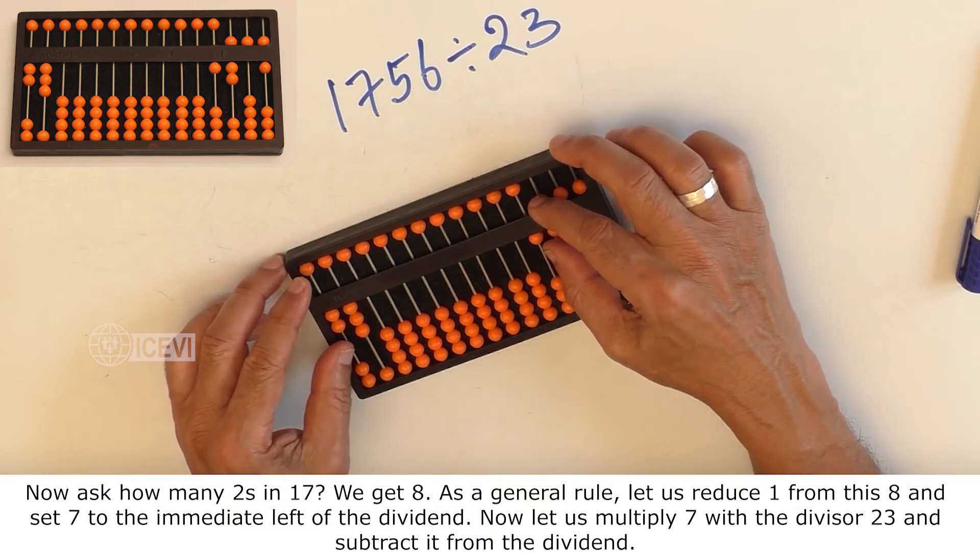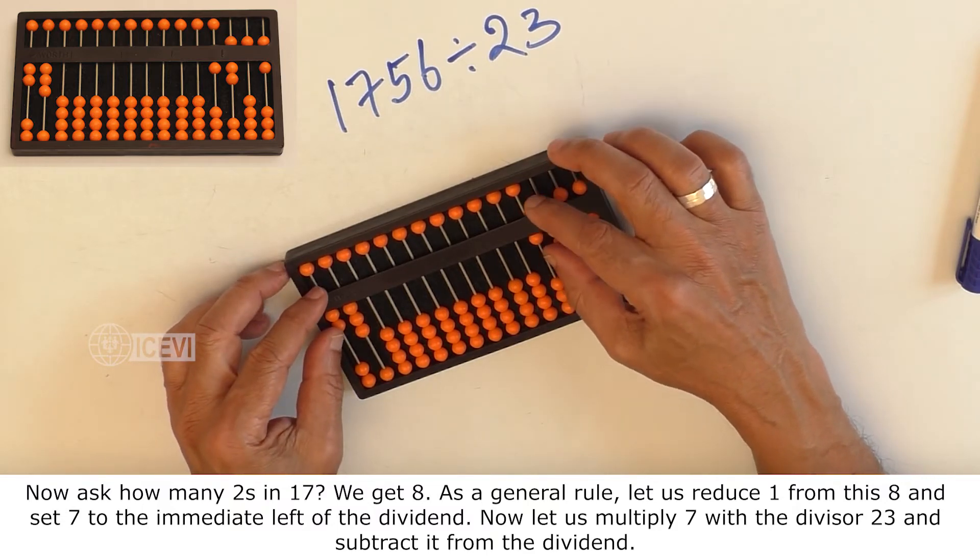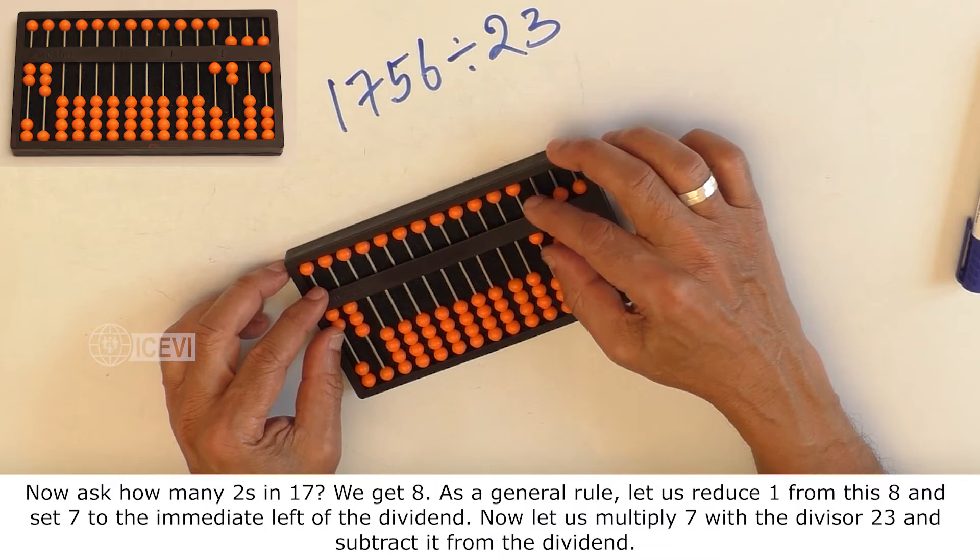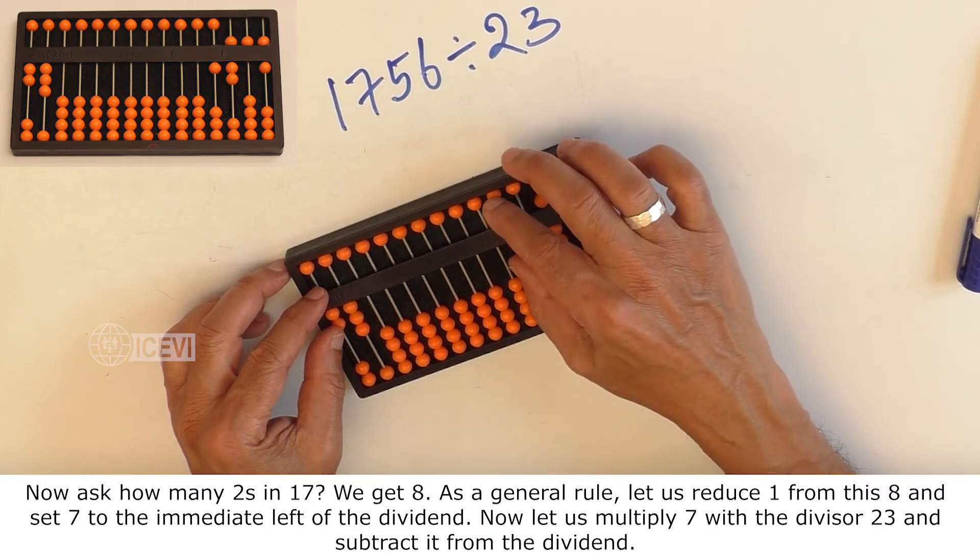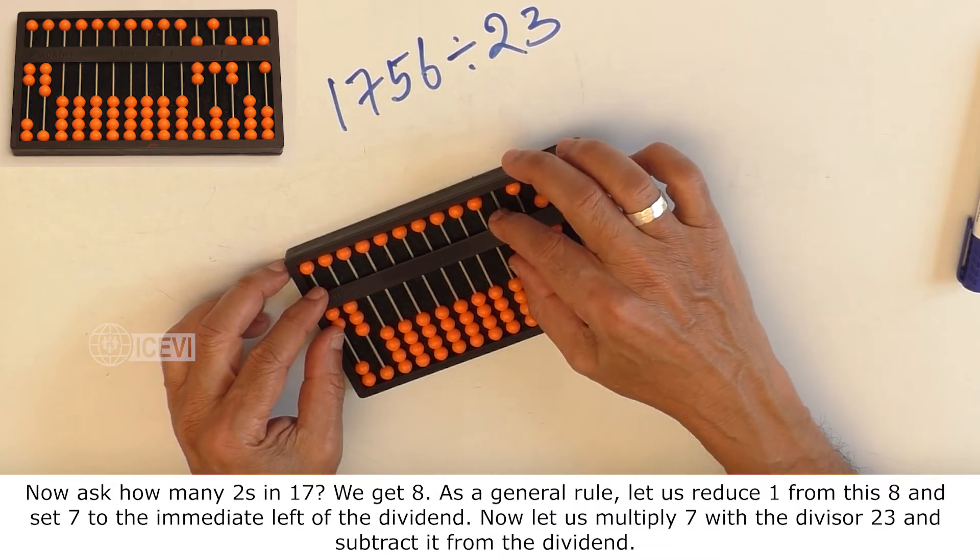As a general rule, let us reduce 1 from this 8 and set 7 to the immediate left of the dividend.